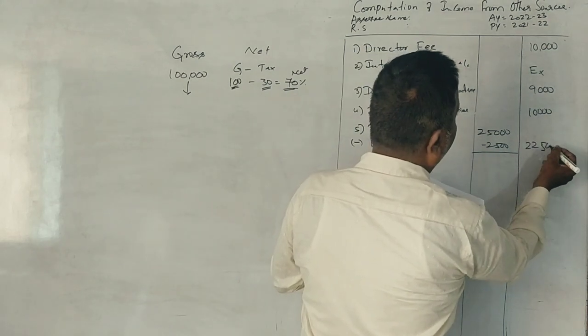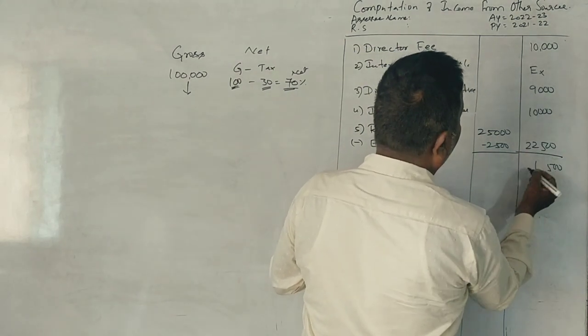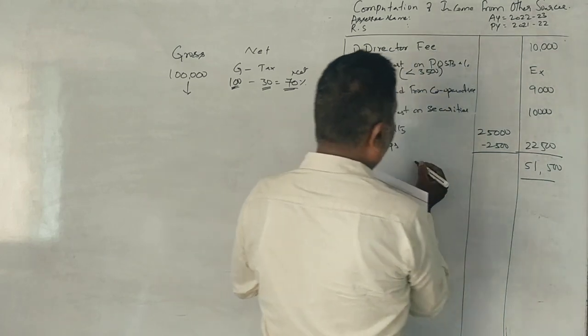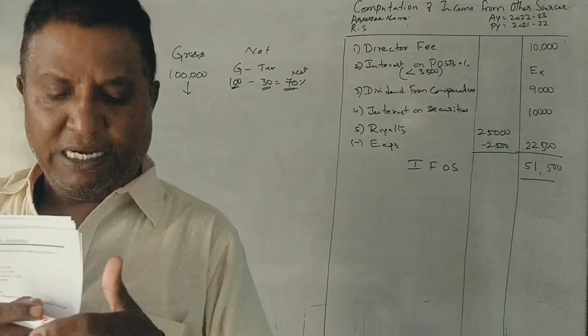That's all. Check the totals. 215,500. This is called income from other sources. As simple as this.